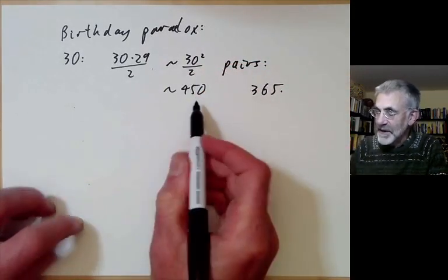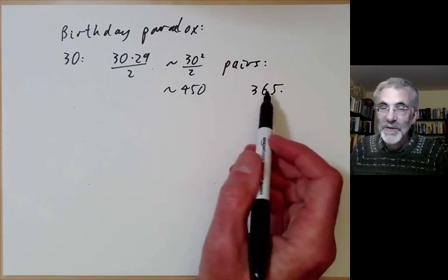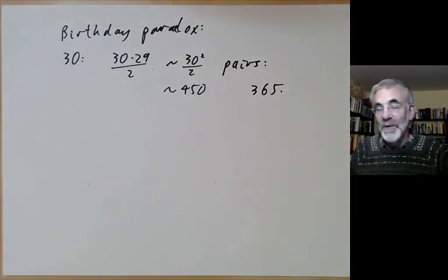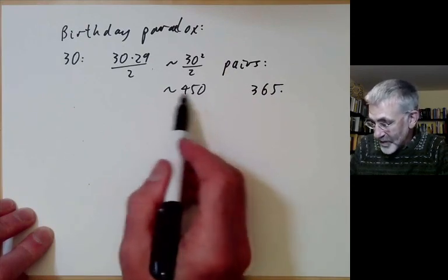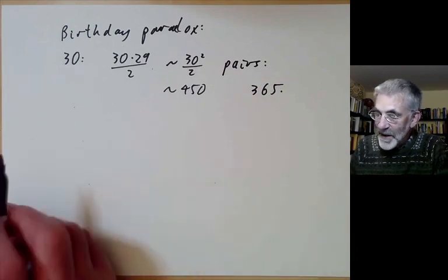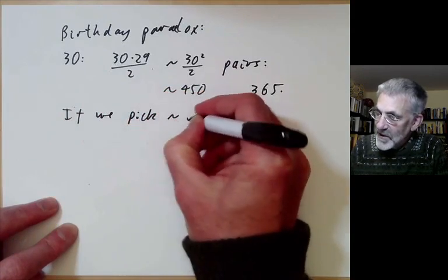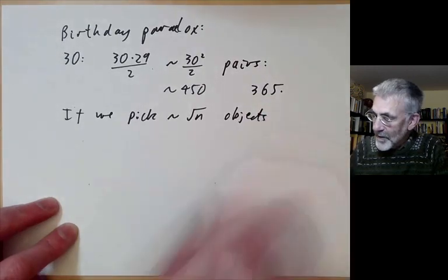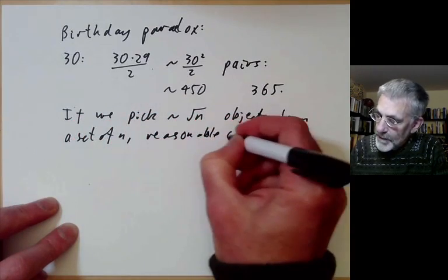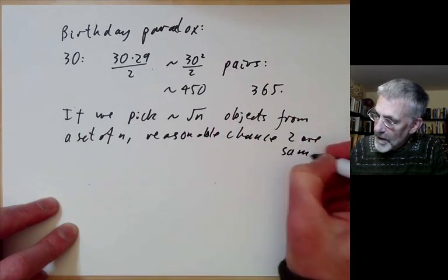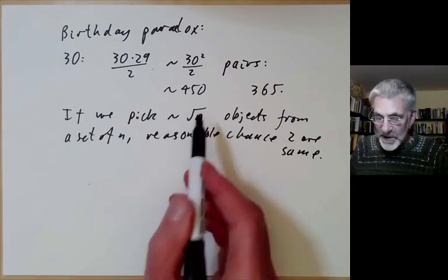That's going to be about 450 pairs of people. On the other hand, the number of days in a year is 365. So roughly speaking, we're allowed 450 guesses, each of which has a 1 in 365 chance of being right. It's pretty obvious there's going to be a reasonable chance that one of these 450 guesses will be correct. A rough rule of thumb is if we pick about square root of n objects from a set of n, there's a reasonable chance two are the same.